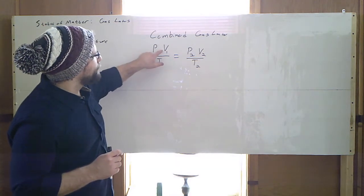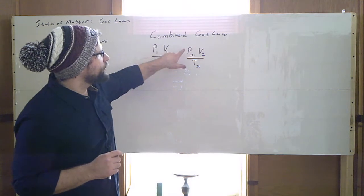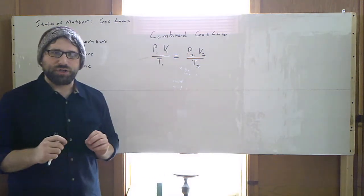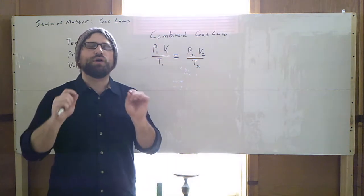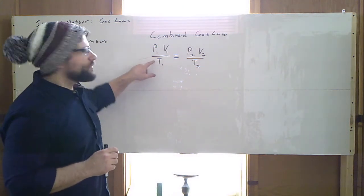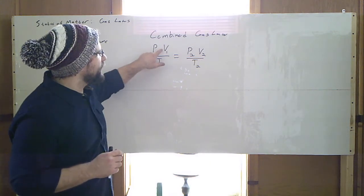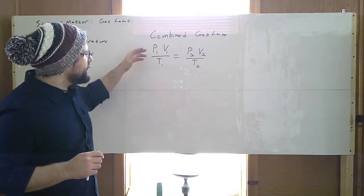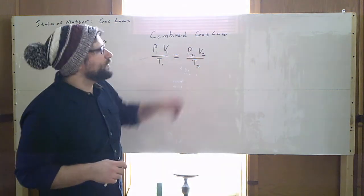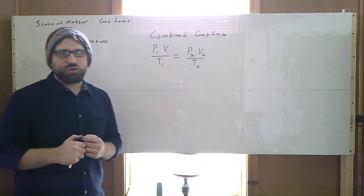The combined gas law states that pressure and volume are directly proportional. If I have a certain amount of pressure and volume here, if I increase my pressure, my volume has to decrease to keep that same proportion. And all of these proportions are going to stay the same. Temperature is inversely proportional to both pressure and volume. So what that means is that if I increase my temperature, my pressure and/or volume must also increase.